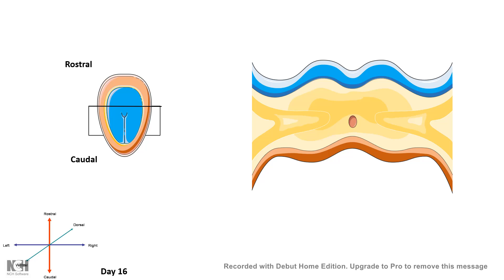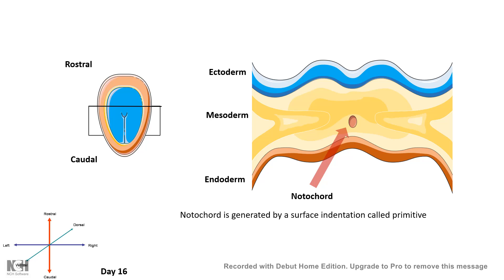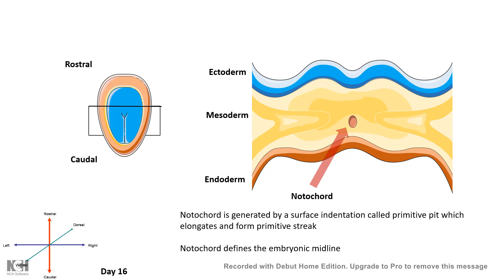In this situation you have the notochord, which is derived from the mesoderm. The notochord plays a central role in development of the neural tube and specification of the nervous system. The notochord itself is generated by an indentation called the primitive pit, which is elongated in a rostrocaudal axis to form the primitive streak.